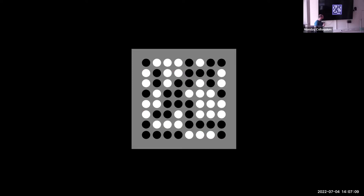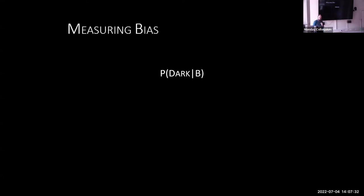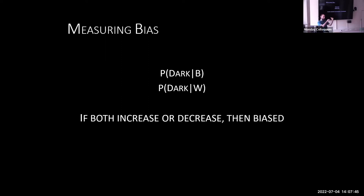The way we studied it in the lab was by making participants do very simple decisions. You might get a stimulus composed of black and white circles, and your job would be as simple as deciding: are there more black or more white circles in this display? Then you respond 'dark' or 'bright' respectively. You can get a sense of how biased someone is by looking at how often they respond 'dark' to a stimulus with more black circles versus more white circles. We'll operationally define bias that way.